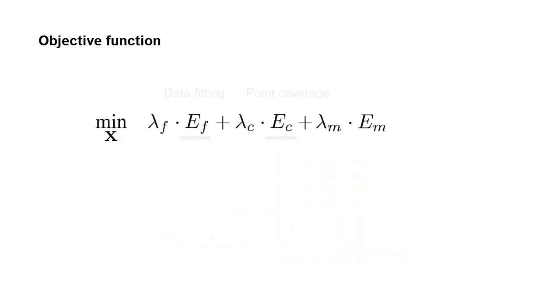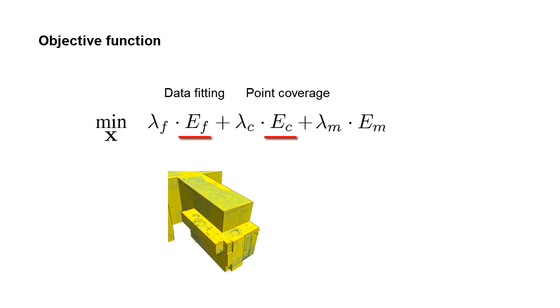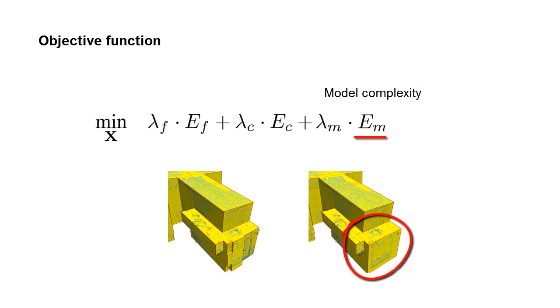For point clouds with missing regions, the above two energy terms tend to stubbornly comply with the incomplete data, resulting in undesired structures. We introduce a model complexity term to handle missing data. This term steers the solution towards having large planar regions.